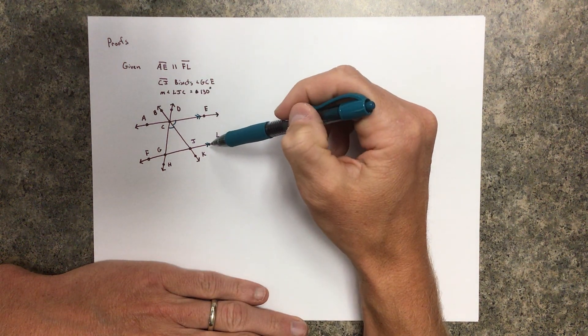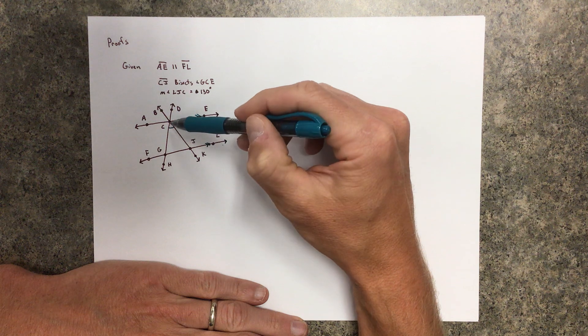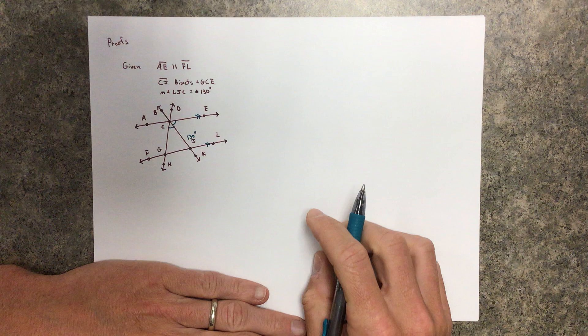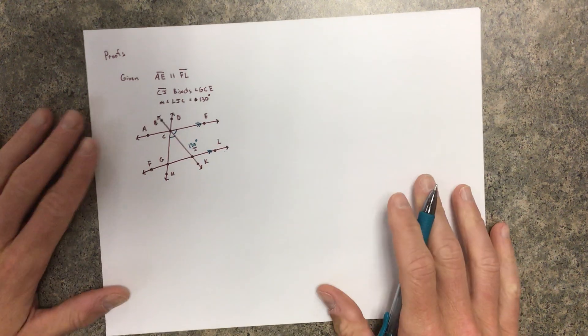And the measure of angle LJC is 130, so this is 130 degrees.